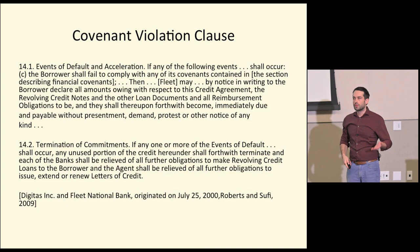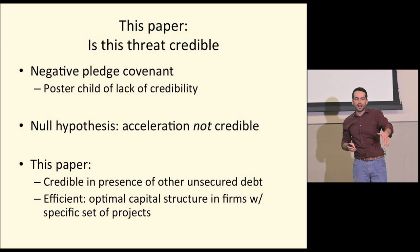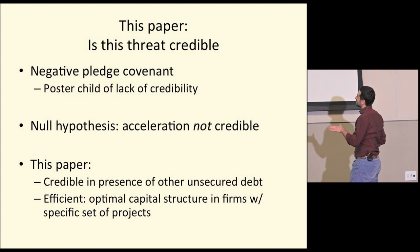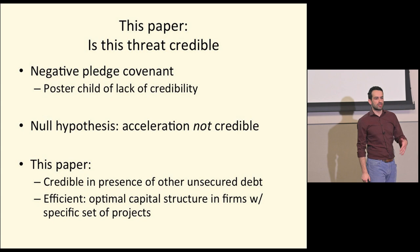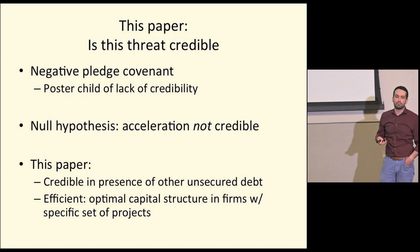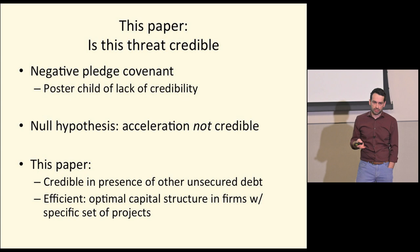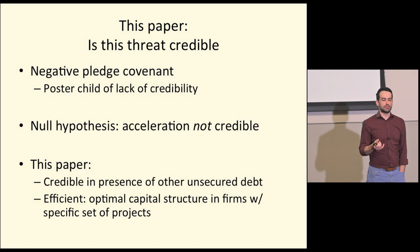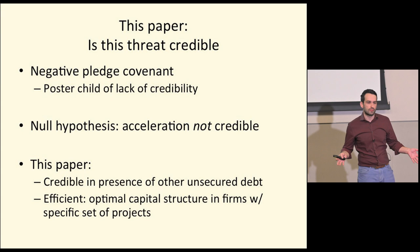Most of the literature has assumed that when a covenant is violated, the borrower and lender sit down, renegotiate, come to a good agreement, and live happily ever after. But is the threat to accelerate debt actually credible? The paper puts forward the negative pledge covenant as a poster child of credibility, and the null hypothesis from the legal literature is that accelerating debt is not credible at all with a negative pledge clause — because if you violate the covenant and issue senior debt, those assets are already gone.